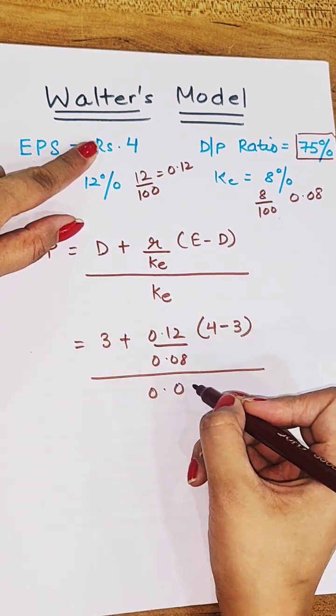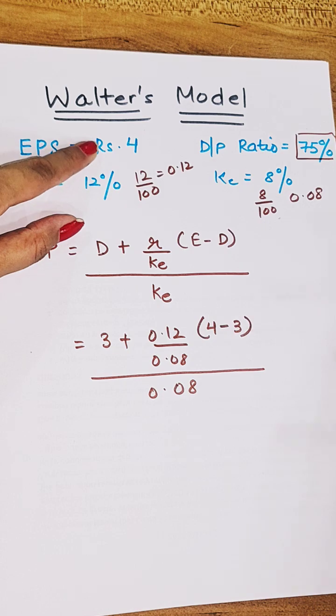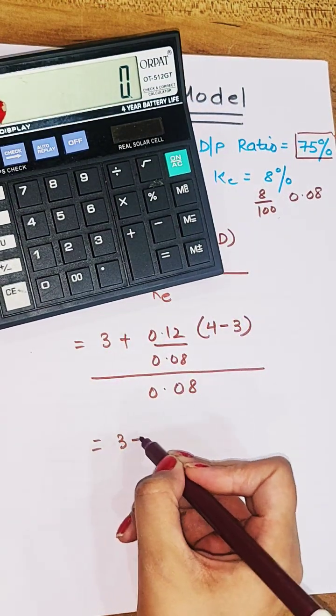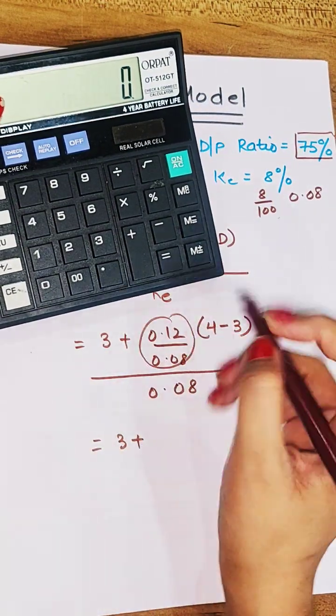Denominator we have KE that means 0.08. Now let's solve the question. 3 will stay as it is, first of all we will be solving this.